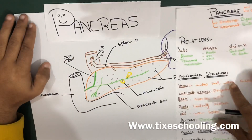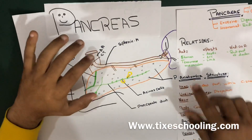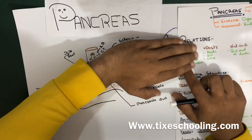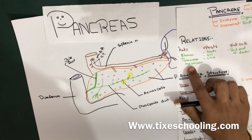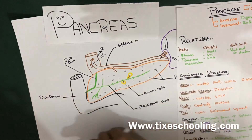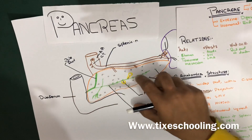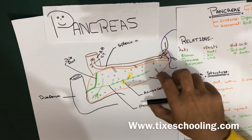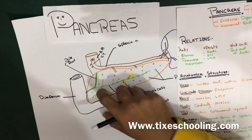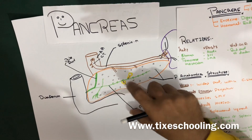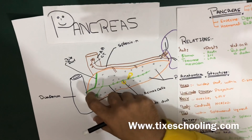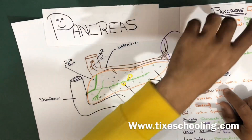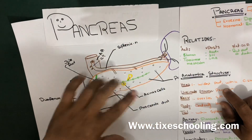Anteriorly, the stomach covers the pancreas, and we also have the transverse mesocolon. The transverse colon turns over the duodenum and also over the pancreas. So anterior to the pancreas we have the transverse colon and the stomach.